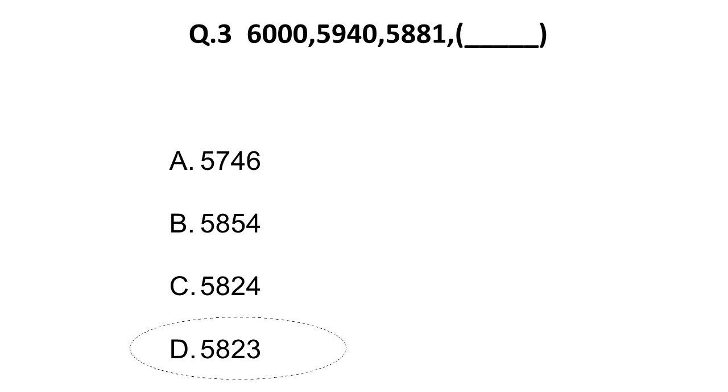Question 3 is from number series: find the missing number. The series is 6000, 5940, 5881, ___. Options: 5746, 5854, 5824, 5823. If you subtract 5940 from 6000, you get 60; subtracting 5881 from 5940 gives 59. So the next number will be less by 58, making the correct answer 5823. If you have doubts about number series or mathematical reasoning, comment below.